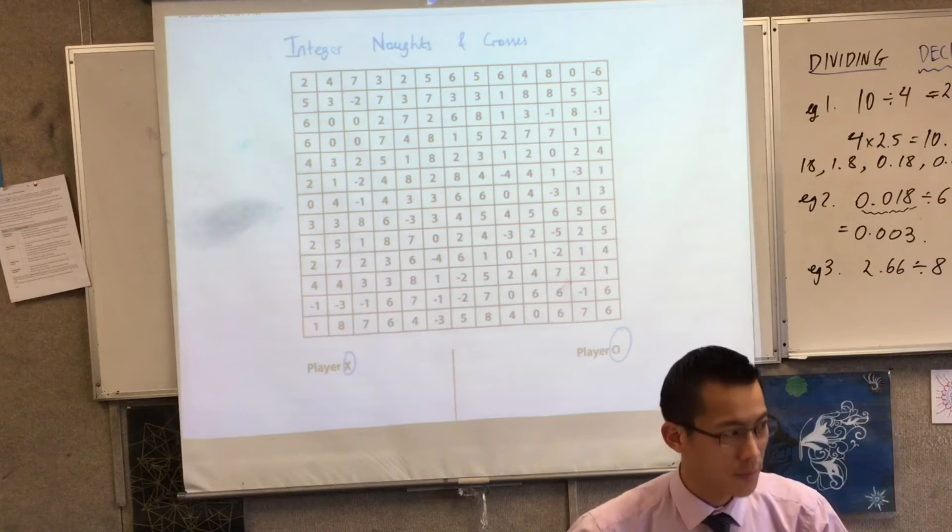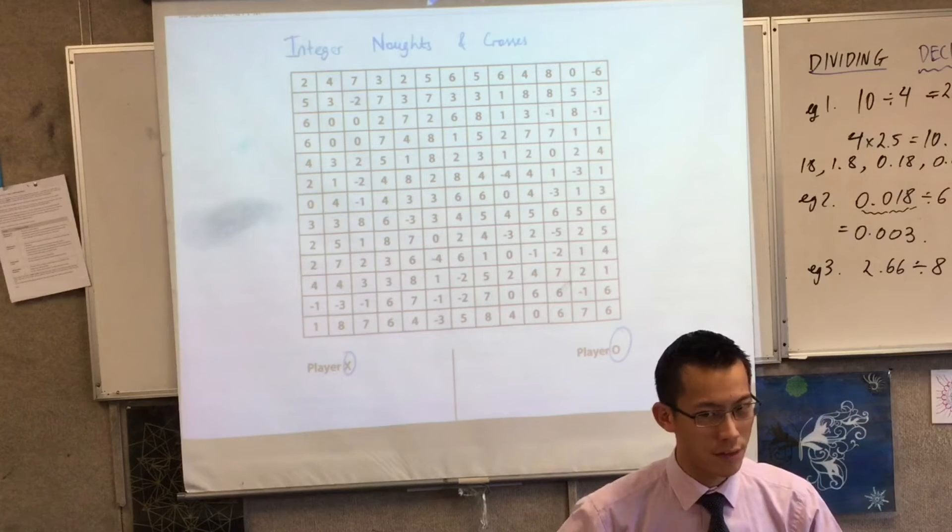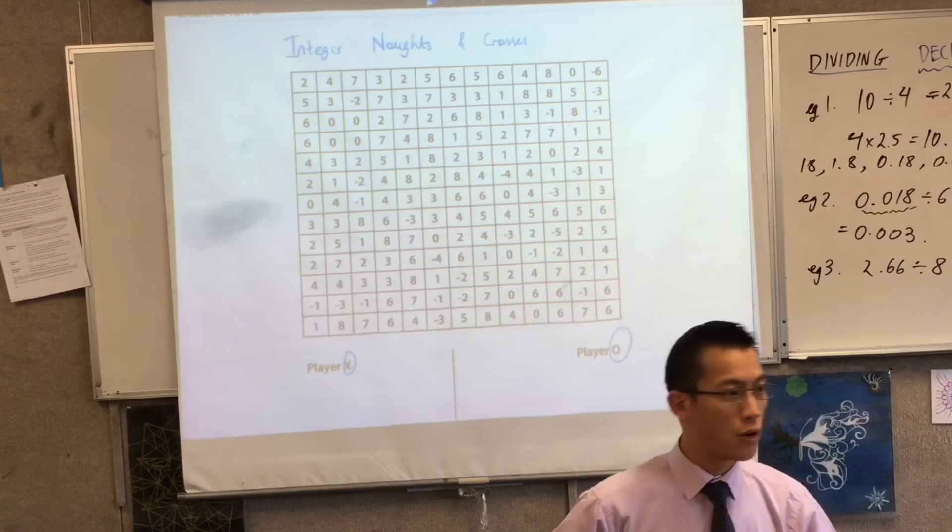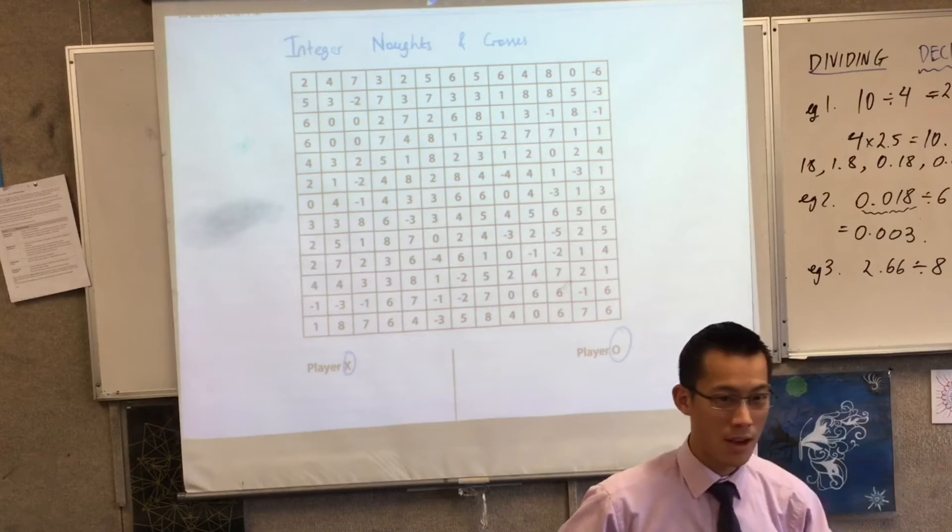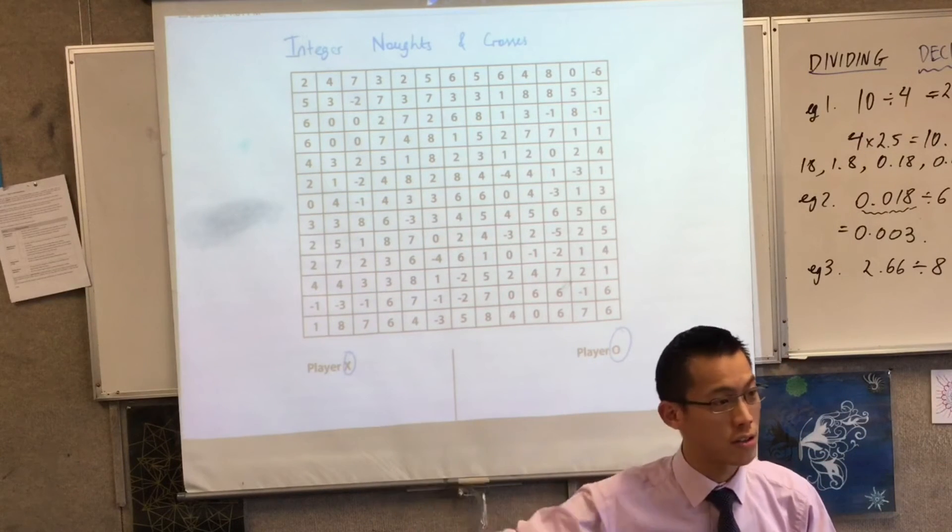Second twist. Each turn, this is why you need five not three, you get to put either, if you're the Noughts player, two Noughts down at a time, or if you're the Crosses player, two Crosses at a time.